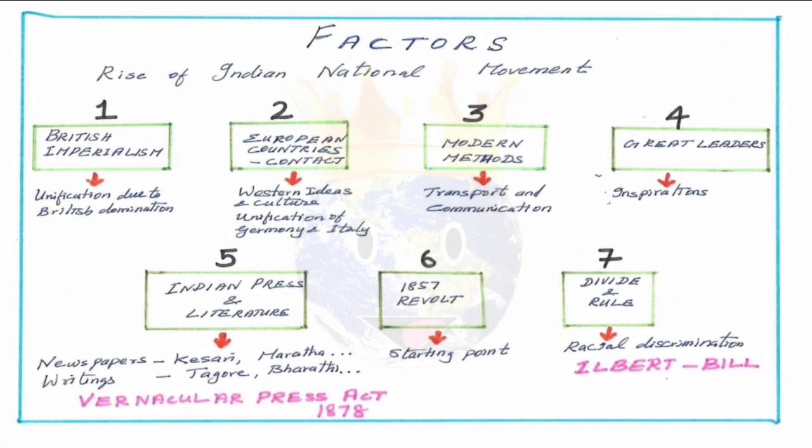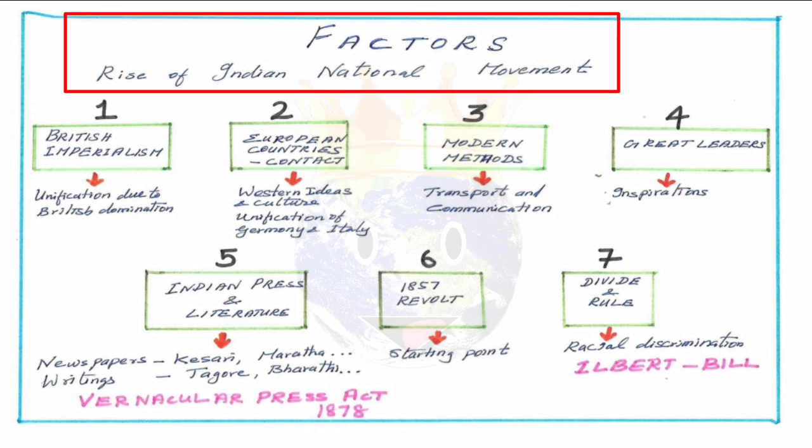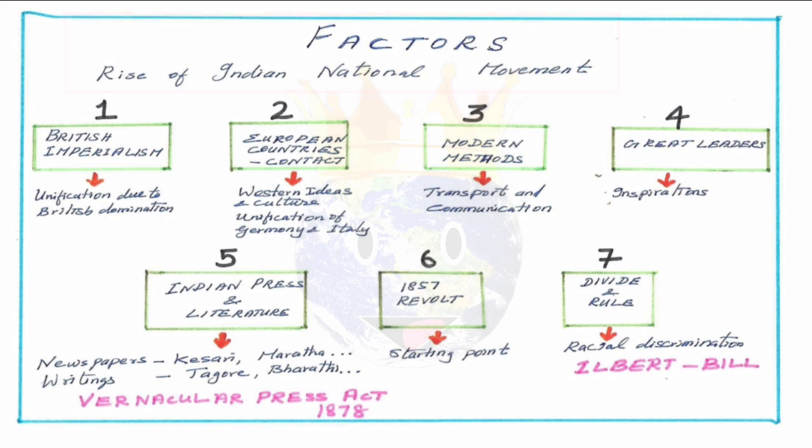Starting with the factors leading to the rise of the Indian national movement: in the second half of the 19th century, Indian people were becoming more politically conscious and wanted freedom for their country. There were many factors that led to the rise of the Indian national movement. Here I have mentioned seven factors; we will see them one by one.